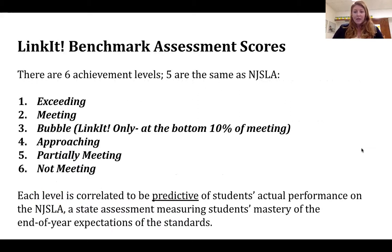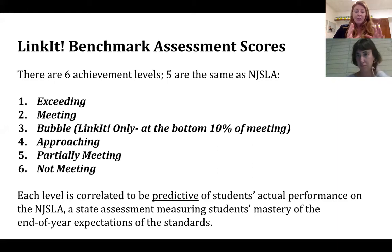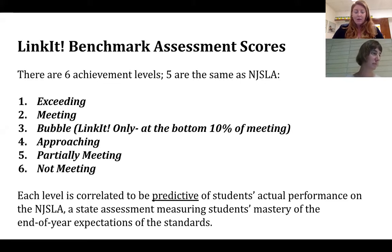When we look at benchmark assessment scores, there are six different achievement levels within Linkit — five are the same as NJSLA. Exceeding is the highest level of performance. The second level is meeting. Then we have a category called bubble, which is specific only to Linkit. Those students are still considered to be meeting, but they're really at the bottom 10% of that meeting category. It helps teachers identify with greater specificity who those students are to keep them in the meeting range.